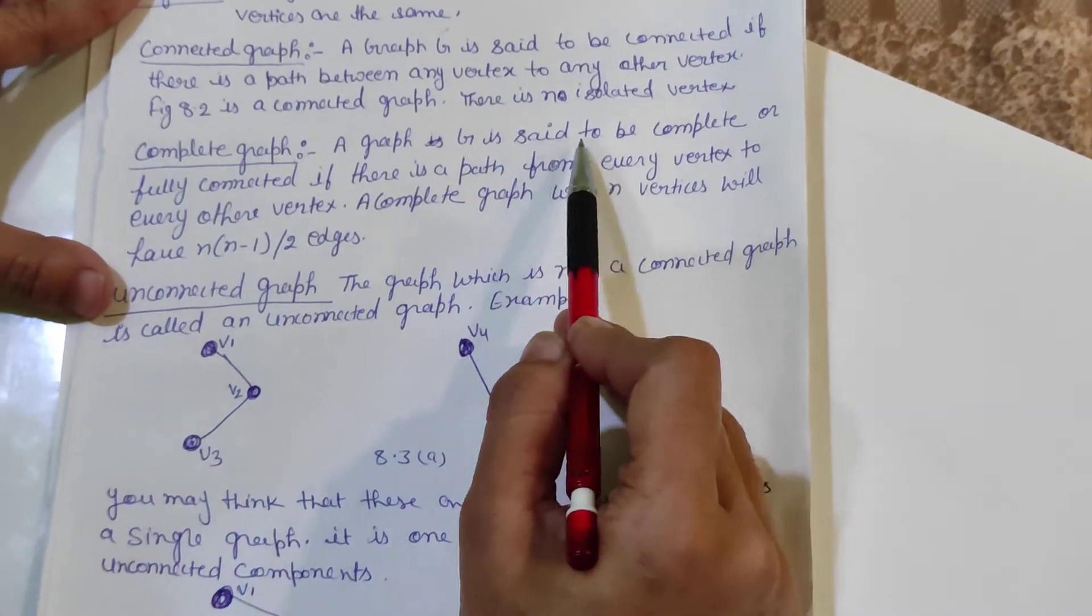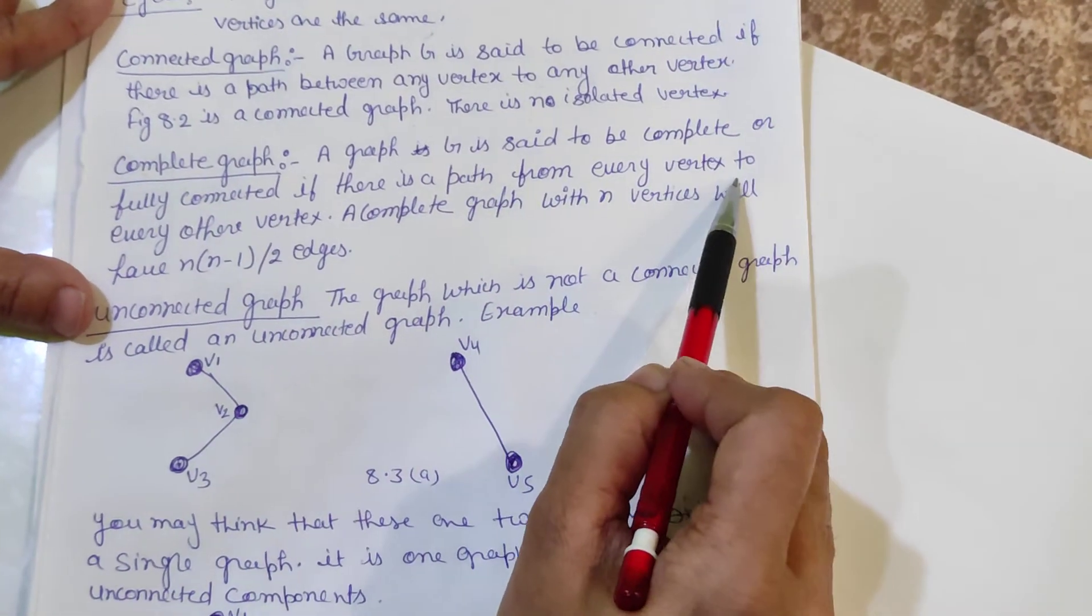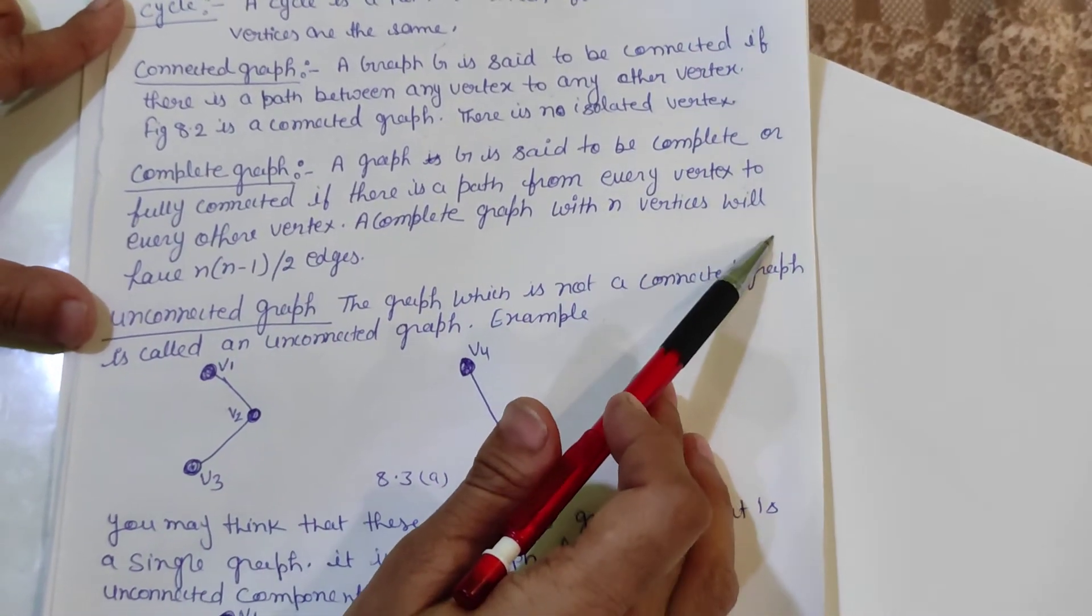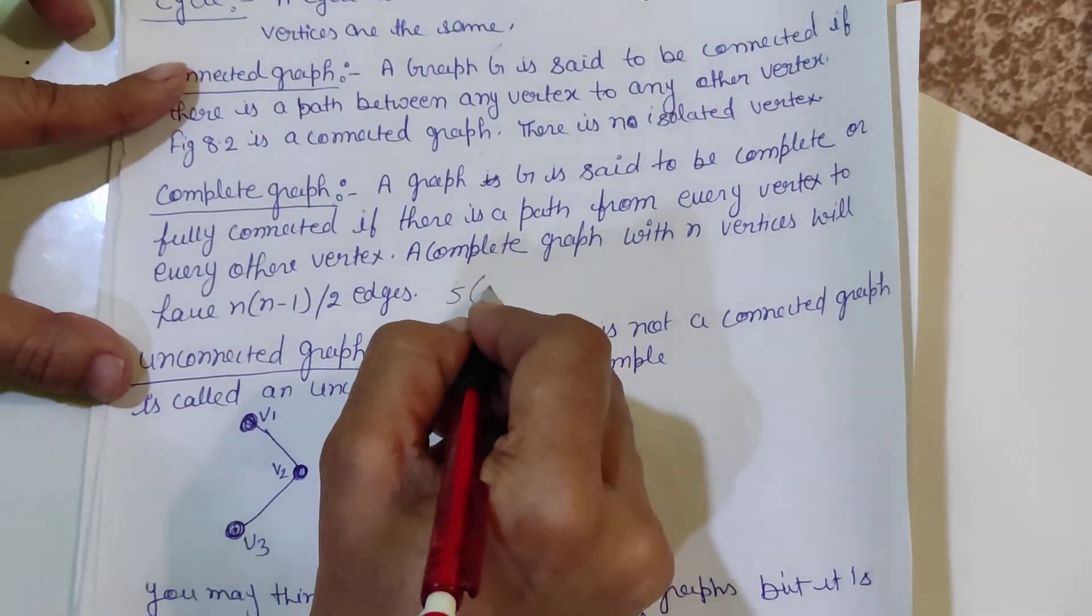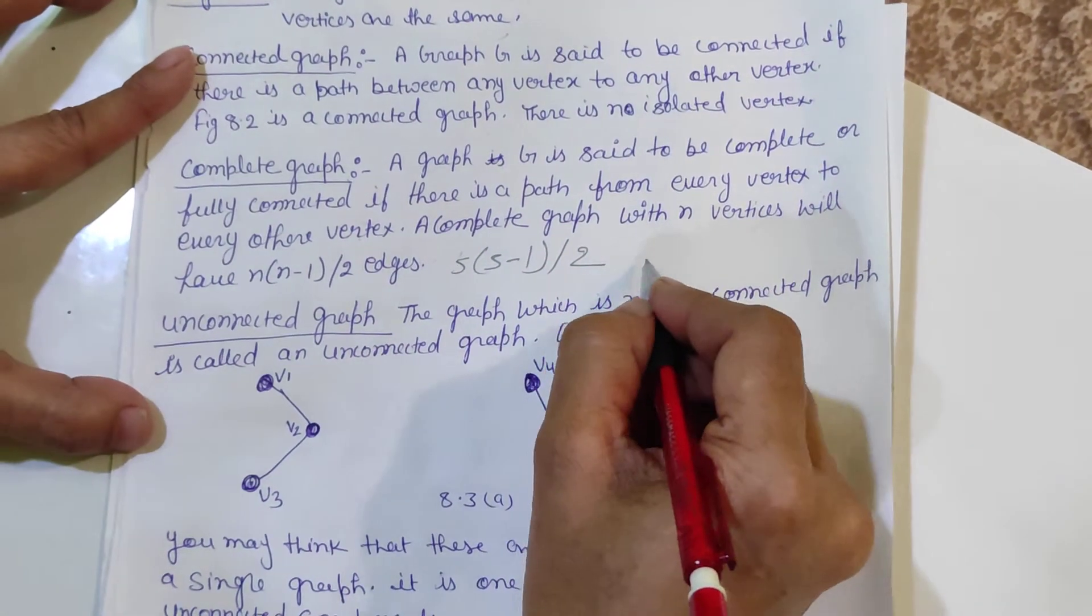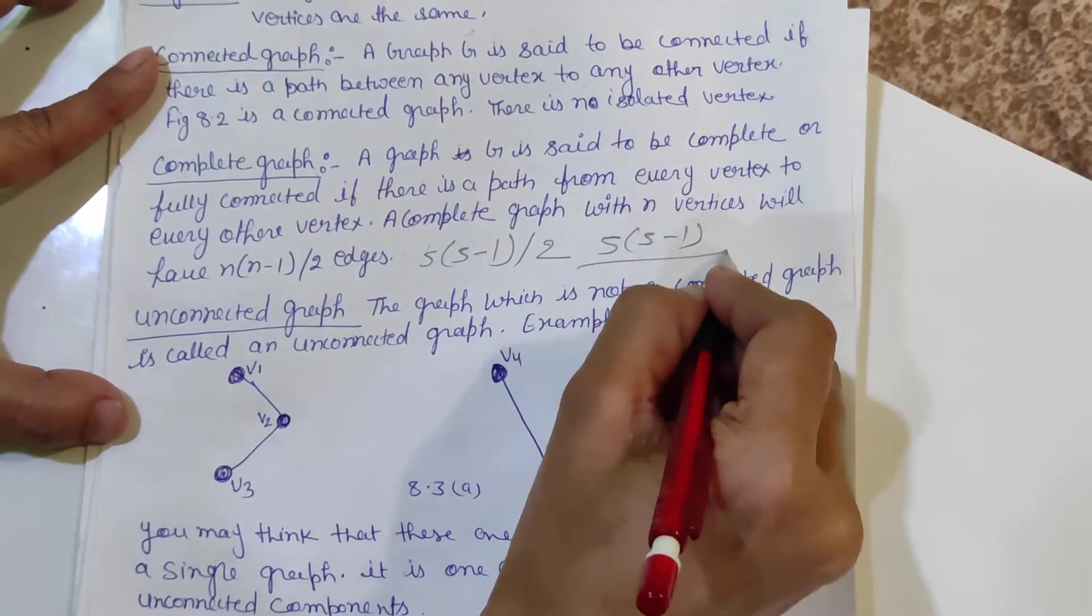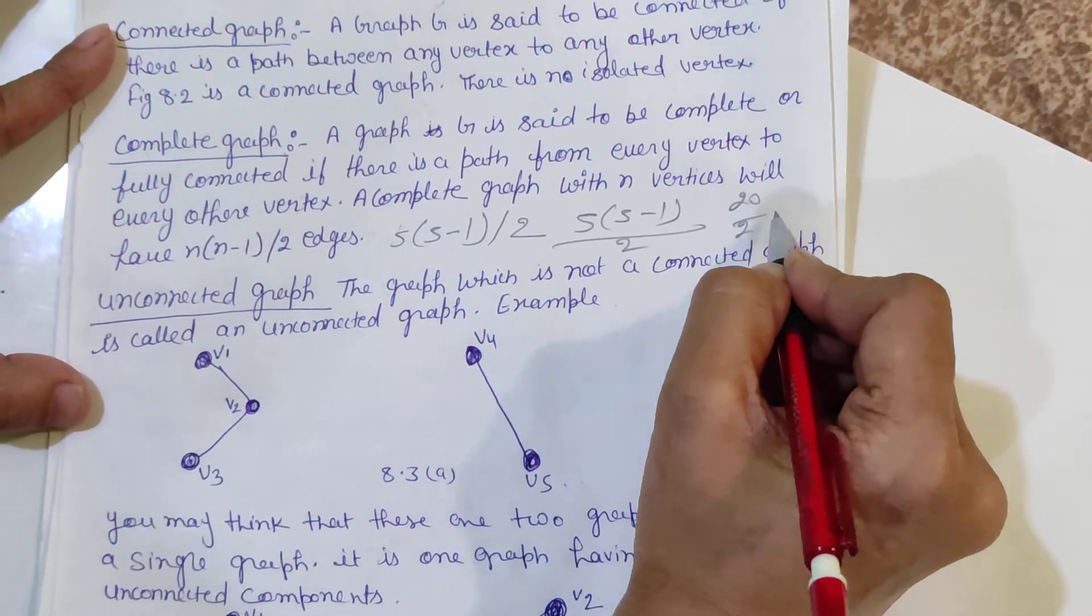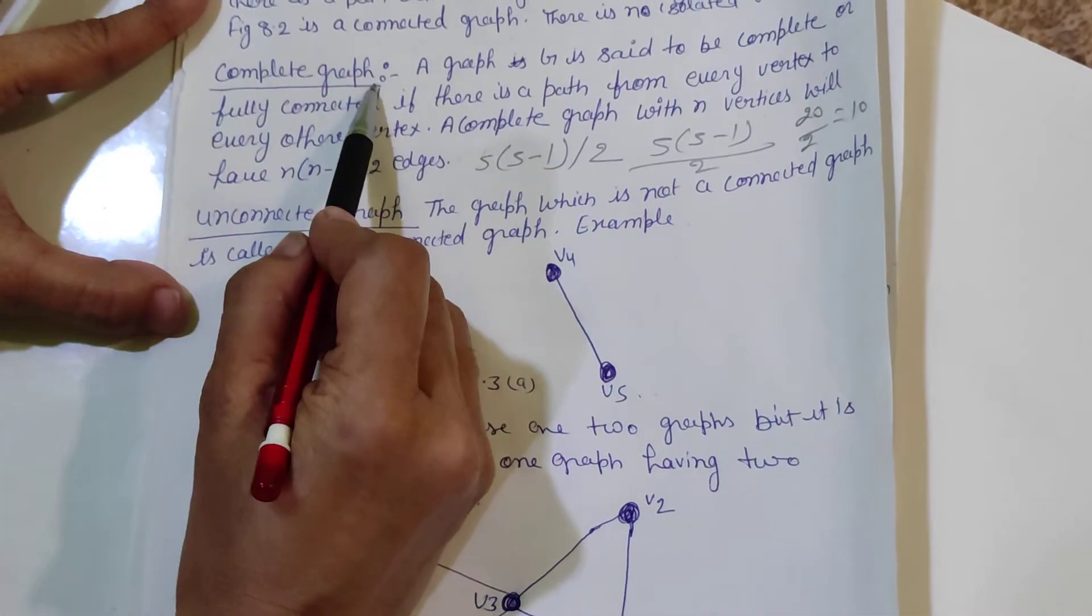Complete graph: A graph G is said to be complete or fully connected if there is a path from every vertex to every other vertex. Complete graph with n vertices will have n(n-1)/2 edges. For 5 vertices: 5(5-1)/2 = 10. That is the complete graph.